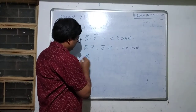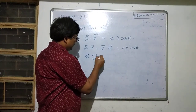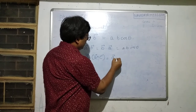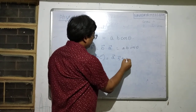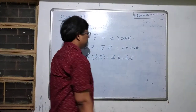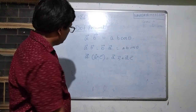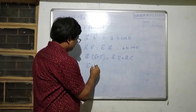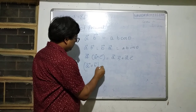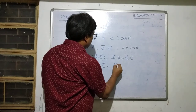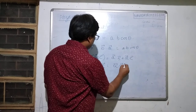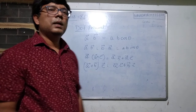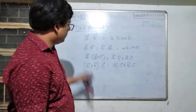The dot product is distributive: A·(B + C) = A·B + A·C, and similarly (A + B)·C follows the same distributive rule. These are basic operations of the dot product.